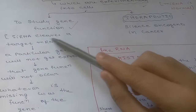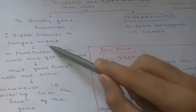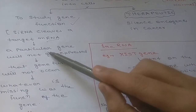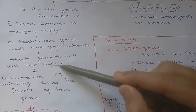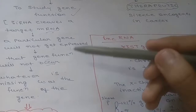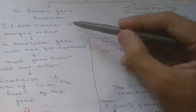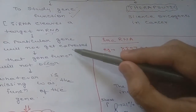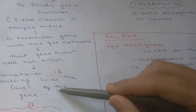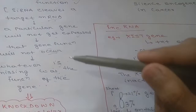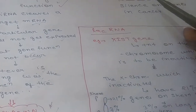siRNA functions in the same way as miRNA. It cleaves a target mRNA so that a particular gene is not expressed and its function is lost. To study a gene's function, we silence that gene using siRNA and then observe what function is missing. This technology is known as knockdown technology.